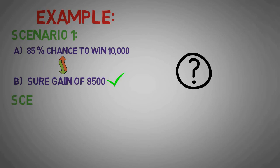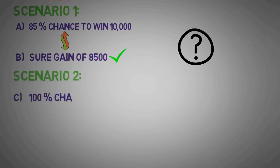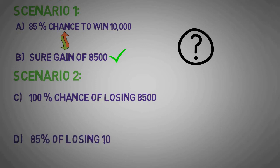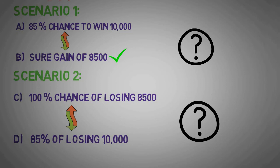Let's take the second scenario. Option C says 100% chance of losing rupees 8,500; option D - 85% chance of losing rupees 10,000. Although both options C and D mean the same, which one will you choose? It was found that most of the people choose option D because of loss aversion.